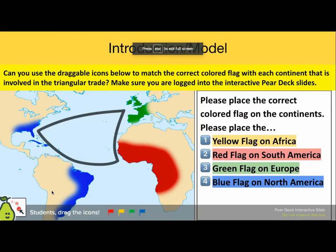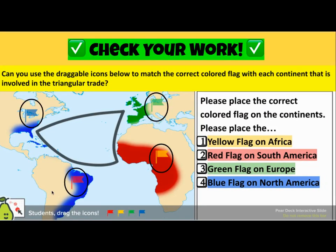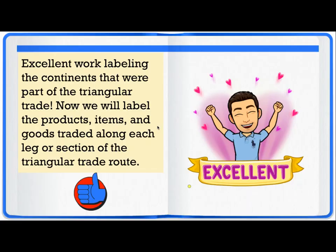Okay everyone, let's take a moment to check our work. As you can see, the flags have been placed on the continents that they correspond with. The yellow flag has been placed on Africa, the red flag has been placed on South America, the blue flag has been placed on North America, and the green flag has been placed on Europe. Excellent work labeling the continents that were part of the triangular trade.